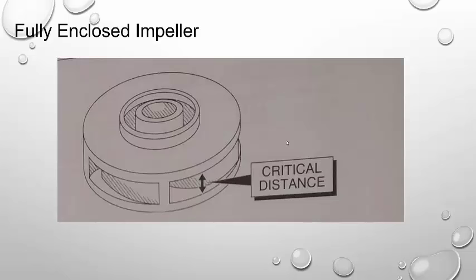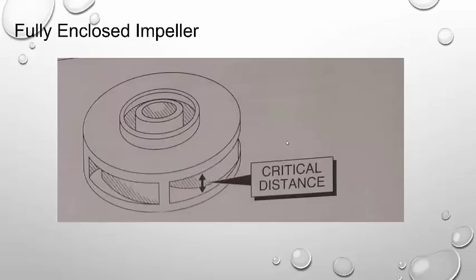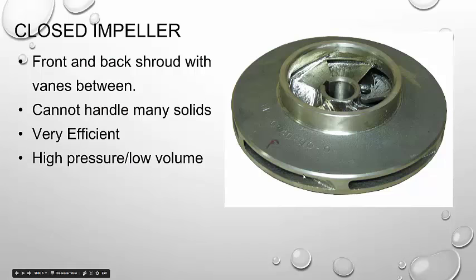So back to this critical distance. Here we're looking at the same fully enclosed impeller, your closed impeller. Critical distance here is across the spacing. So if I look back on this image, the critical spacing would be here, the distance between these two shrouds. And that's going to limit the size of solids. And these can be very, very small. But remember,